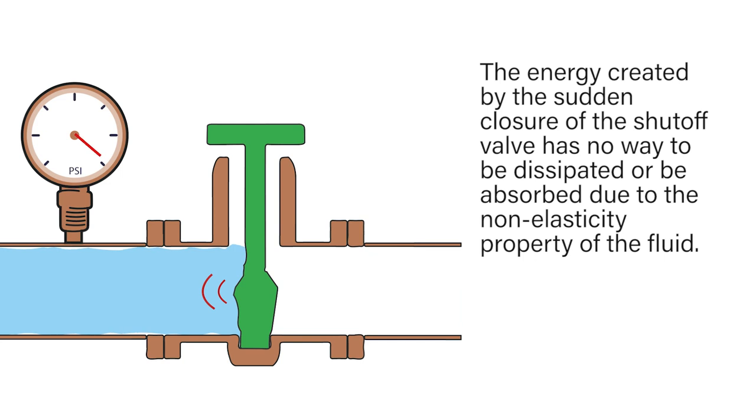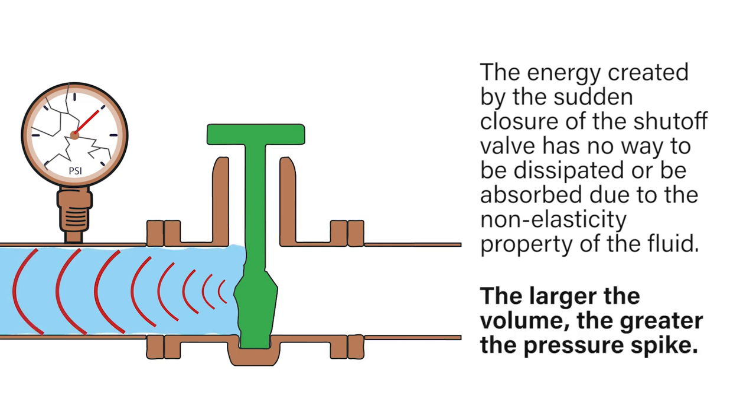The energy created by the sudden closure of the shutoff valve has nowhere to be dissipated or absorbed due to the non-elastic properties of the fluid. The larger the volume, the greater the pressure spike.